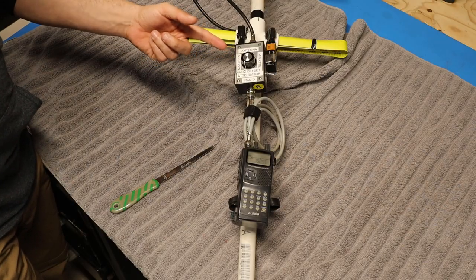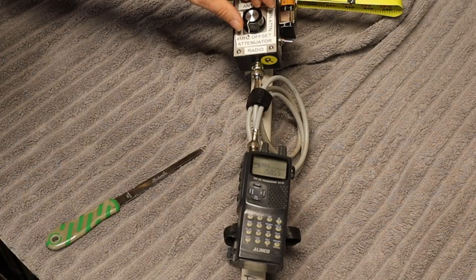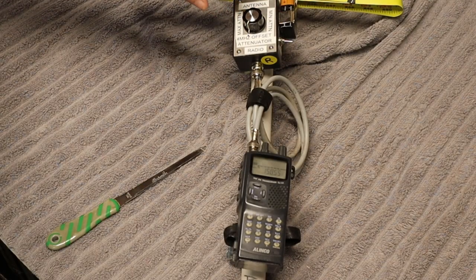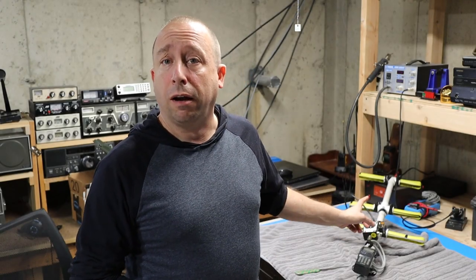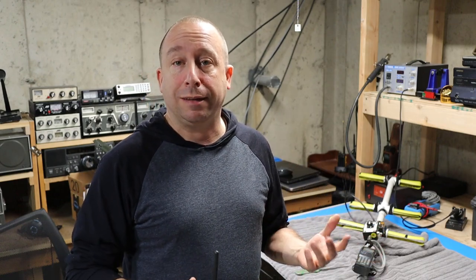If I move over here so I'm about three feet away, the signal almost disappears depending on where I hold the radio. So I think you can see how useful an offset attenuator like this would be, especially when you're in real close proximity to a Foxbox or a hidden transmitter, especially one that's maybe running a little bit higher power and is really well camouflaged.